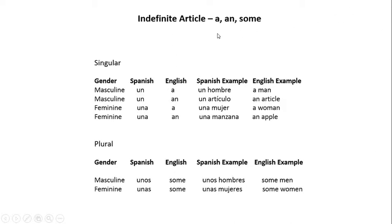The indefinite article: 'a', 'an', and 'some'. Looking at the chart, the masculine singular version of 'a' is 'un' — 'un hombre', a man. The masculine singular version of 'an' is also 'un' — 'un artículo', an article. The feminine singular version of 'a' is 'una' — 'una mujer', a woman. The masculine plural version of 'some' is 'unos' — 'unos hombres', some men. The feminine plural version of 'some' is 'unas' — 'unas mujeres', some women.